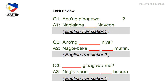Let's review what you have just learned through a short and simple exercise. Fill in the blanks with the correct word or words and translate the English phrases to Filipino. Question 1: Anong ginagawa blank? Answer 1: Naglalaba blank ni Navin. Can you give me the English translation? You may write your answers on a piece of paper and compare to the answer key on the next slide. You may also pause the video while answering.